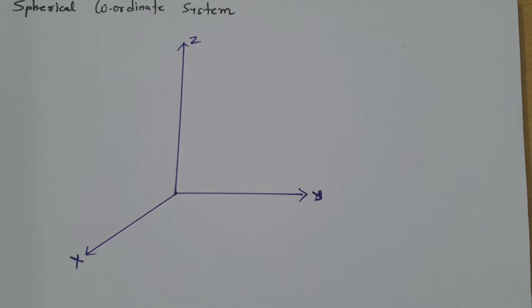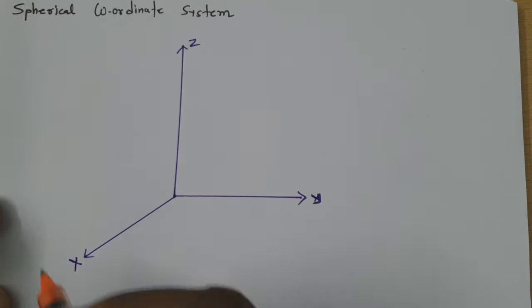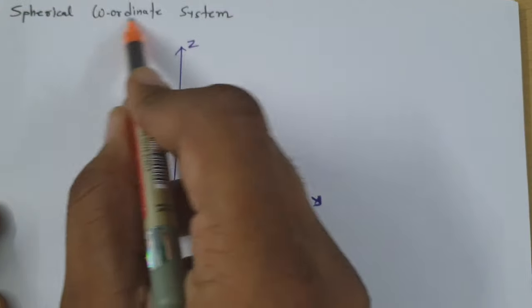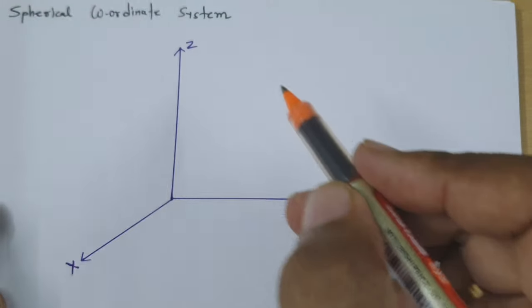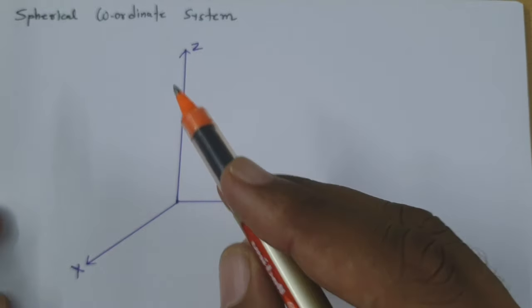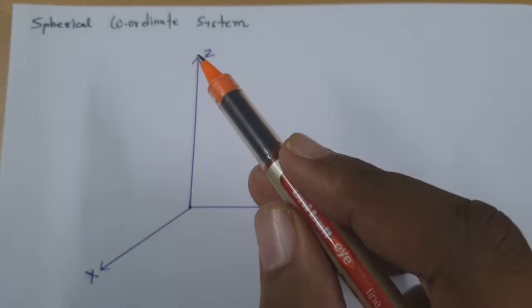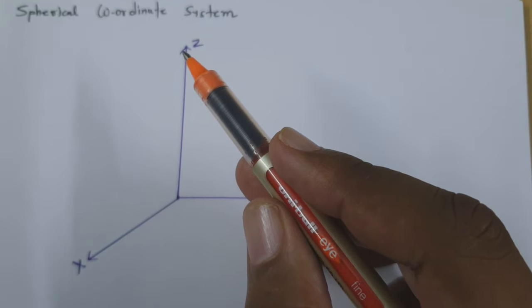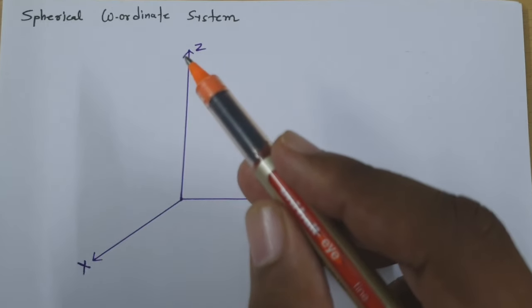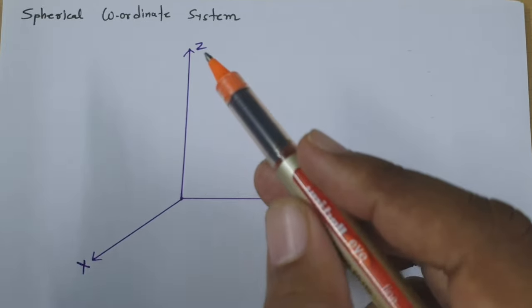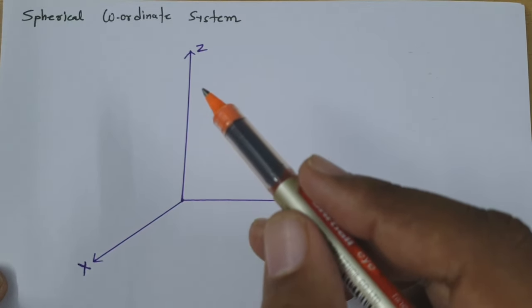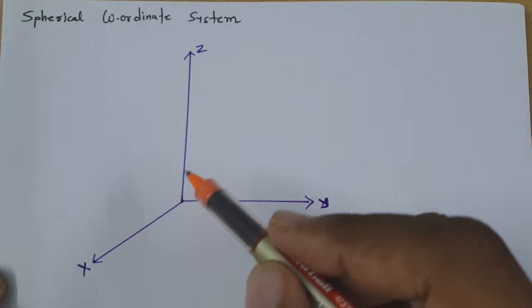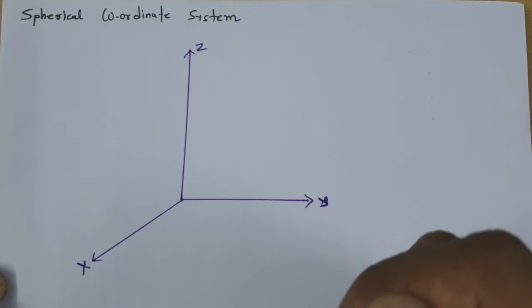Welcome to Electromagnetics Theory Playlist. Here in this session, I will be explaining the Spherical Coordinate System. I will explain how to represent the Spherical Coordinate System, and after that how we can convert Cartesian Coordinates into Spherical Coordinates and Spherical Coordinates into Cartesian Coordinates.